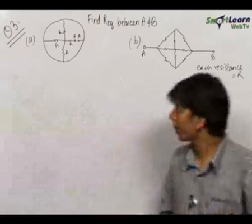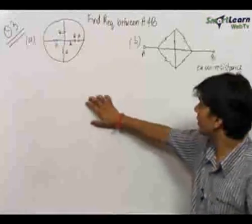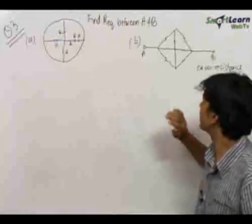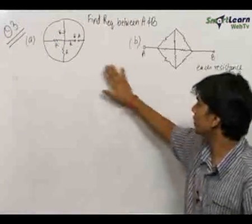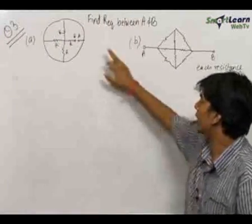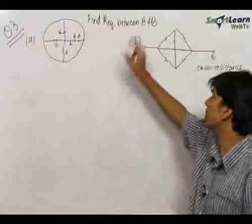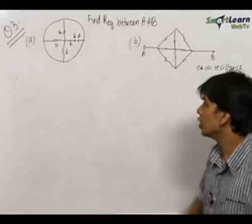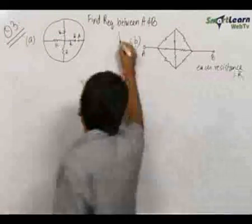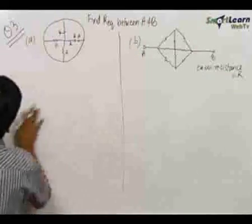The third question that we have: we have been given two circuits. For each of the two circuits we need to find out the equivalent resistance between A and B. So let us begin with the first part.